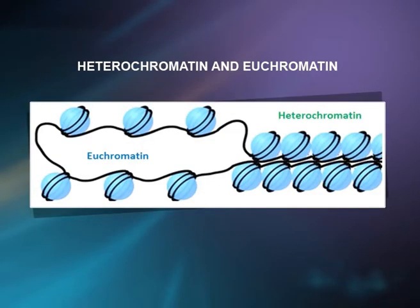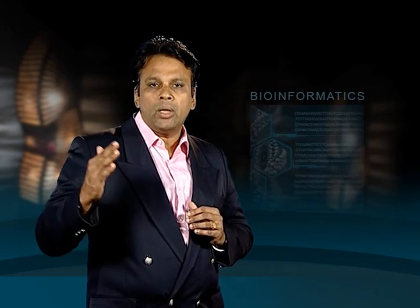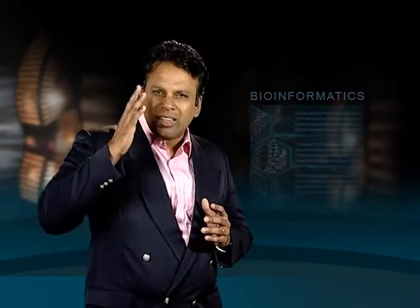Heterochromatin is tightly packed chromatin that is not actively transcribed. Euchromatin is loosely packed chromatin that is easily accessible by transcription enzymes and actively transcribed. Most modifications are distributed in distinct localized patterns within the upstream region, the core promoter, and the 5-prime and 3-prime ends of the open reading frame. The location of a modification is tightly regulated and crucial for its effect on transcription. For example, Set2-mediated methylation of histone H3K36 normally occurs within the ORF of actively transcribed genes; however, if Set2 is mis-targeted to the promoter region through artificial recruitment, it represses transcription.